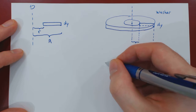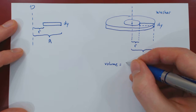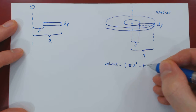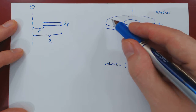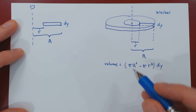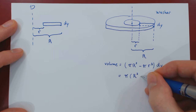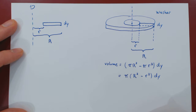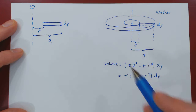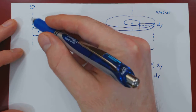The volume of our washer is given by the surface area of the washer — the area of the larger circle, pi times uppercase R squared, minus the area of the smaller circle, pi times lowercase r squared — times the thickness of the washer, dy. We can factor pi from the expression, so the volume is simply pi times the quantity larger radius squared minus smaller radius squared, times dy. Think of it as the volume of the larger disk minus the volume of the smaller disk. And we can reproduce this if the axis is not vertical but horizontal.